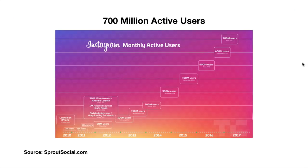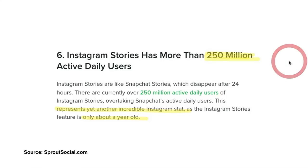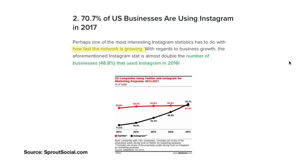Well, let me tell you. Right now, Instagram has 700 million active users that you can absolutely reach on Instagram with your video ads. More importantly, Instagram Stories right now has 300 million active users — this slide here says 250 million, but that's an older stat. Right now Instagram Stories has 300 million active users that you could also reach.